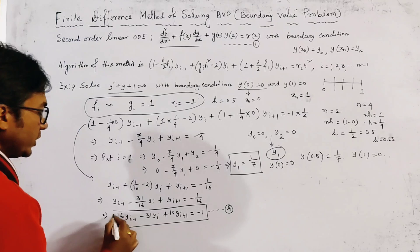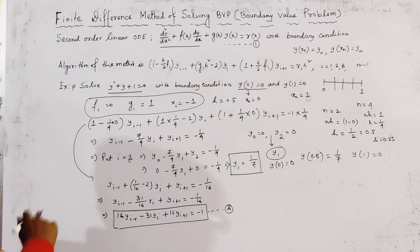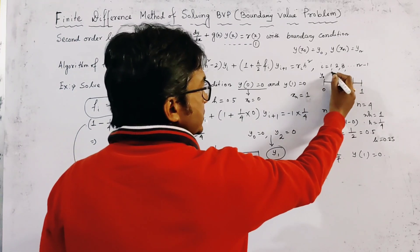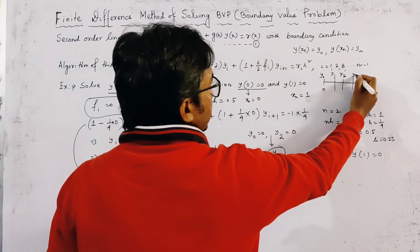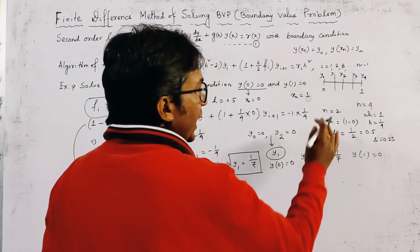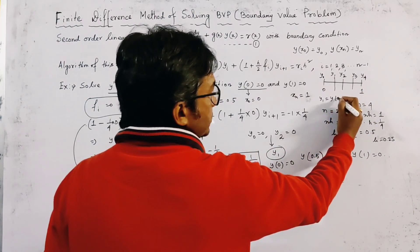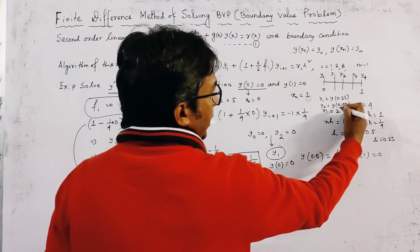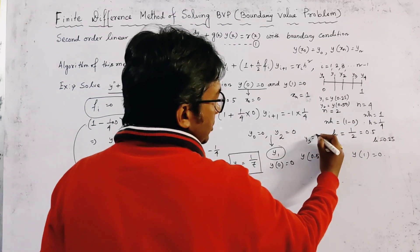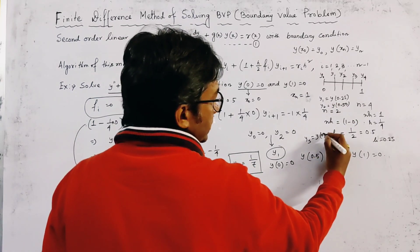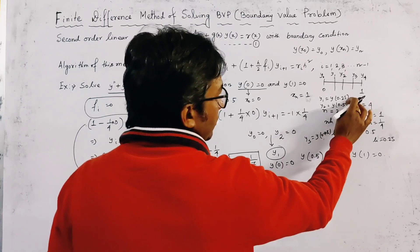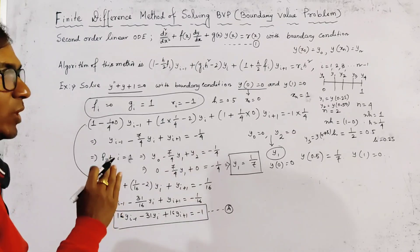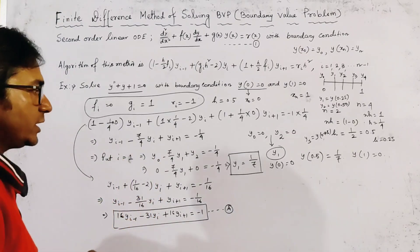With n = 4, we need to find y₁, y₂, y₃, where y₁ = y(0.25), y₂ = y(0.50), y₃ = y(0.75), and y₄ = y(1) = 0.